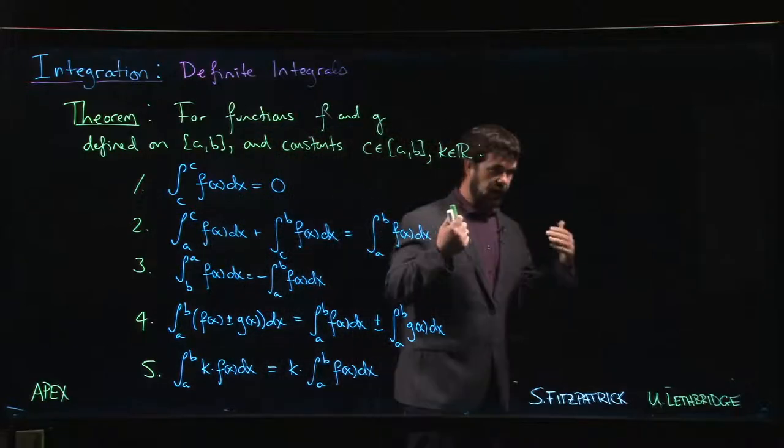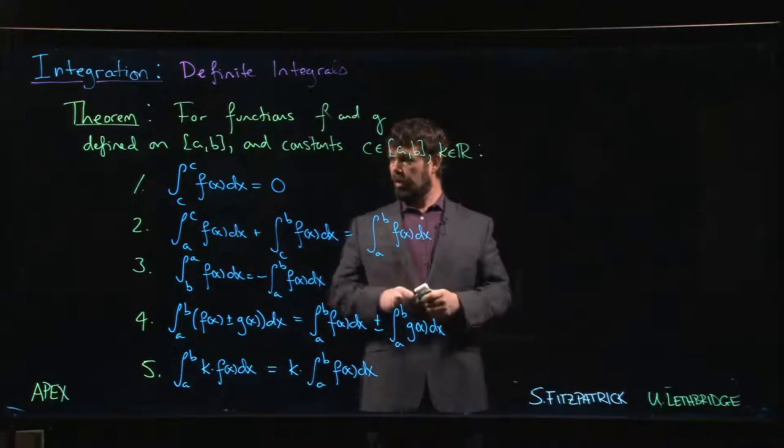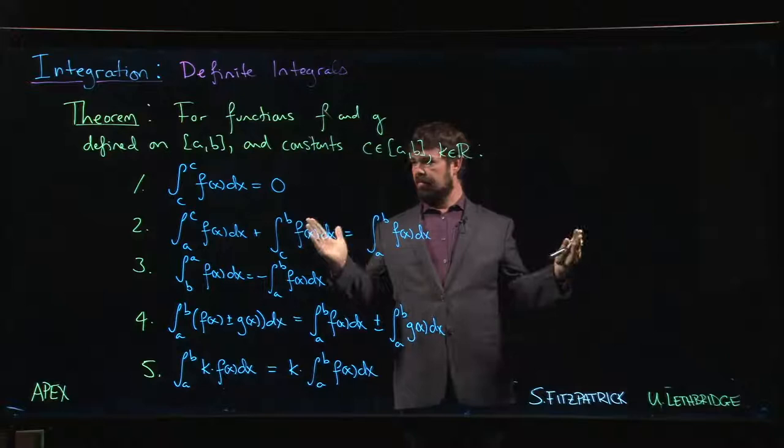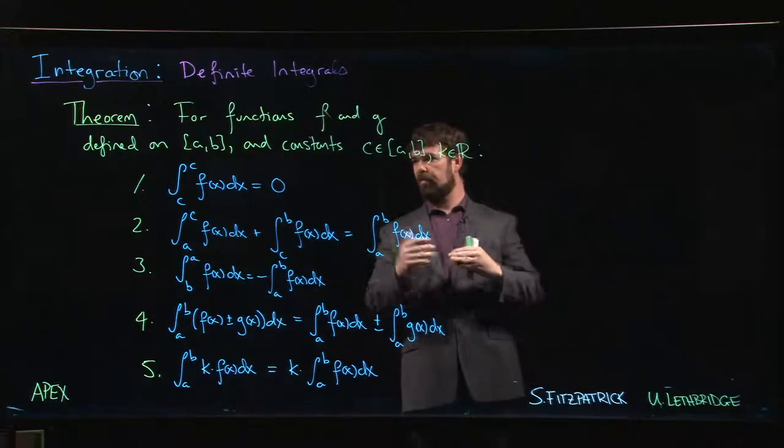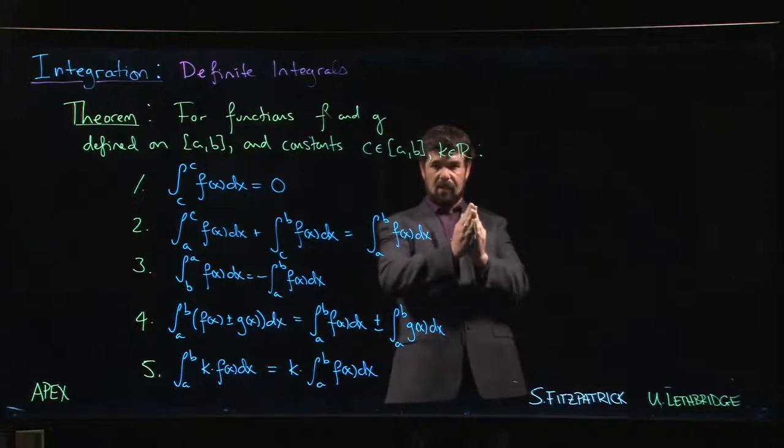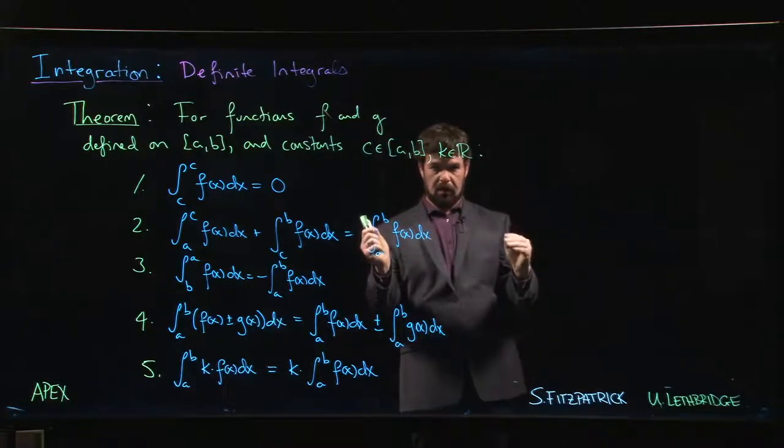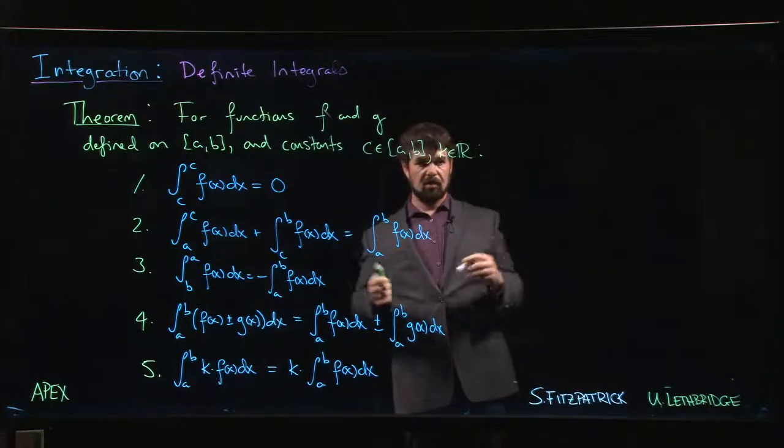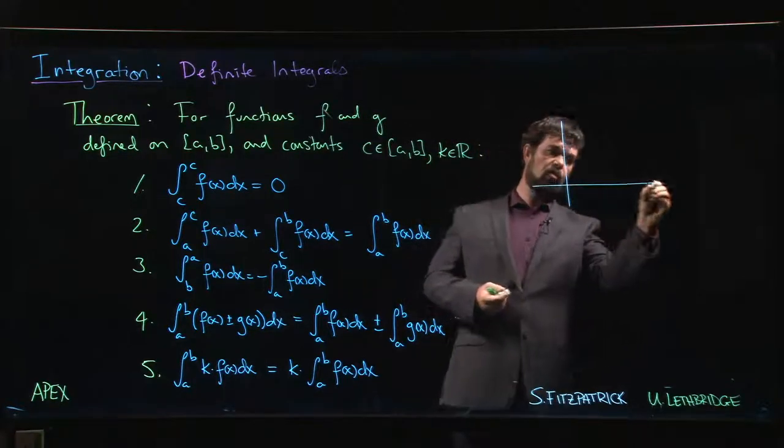So we understand this first property as saying that if your region is one-dimensional, right, if you're beginning and ending at the same point, then all you have is a height, there's no width. And if there's no width, there's no area. So this is simple enough, right? We saw it in the last example in terms of triangles that if there's no width, there's no area.